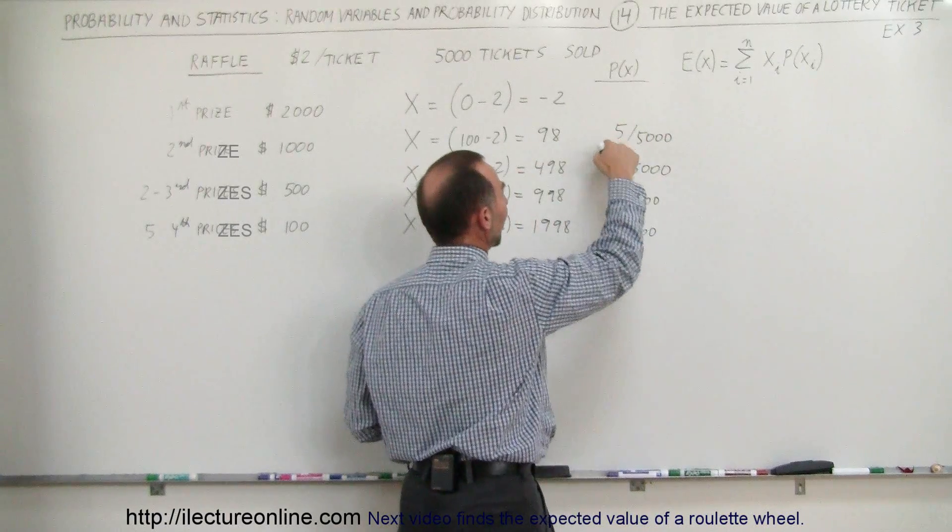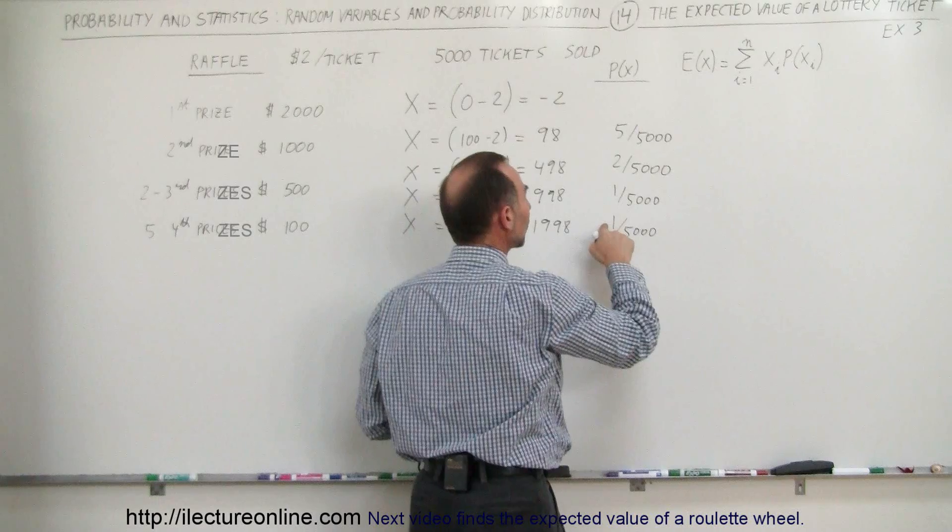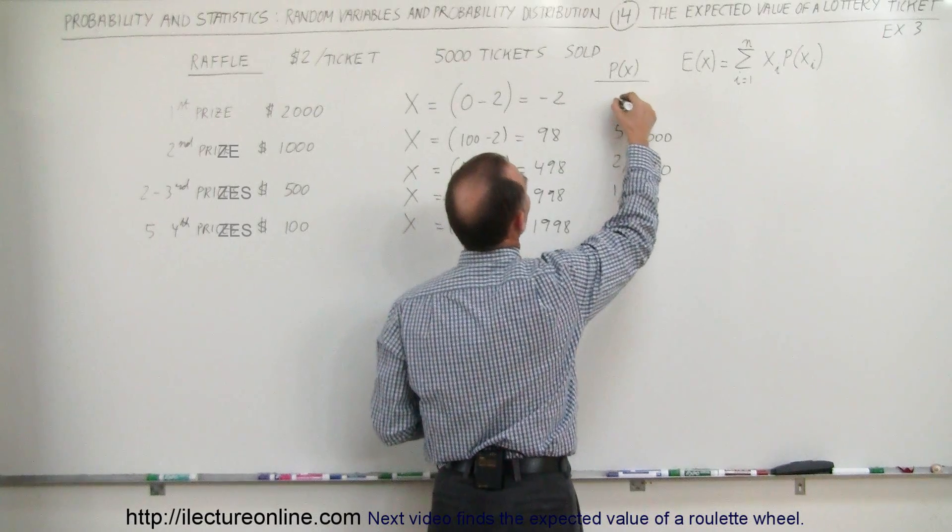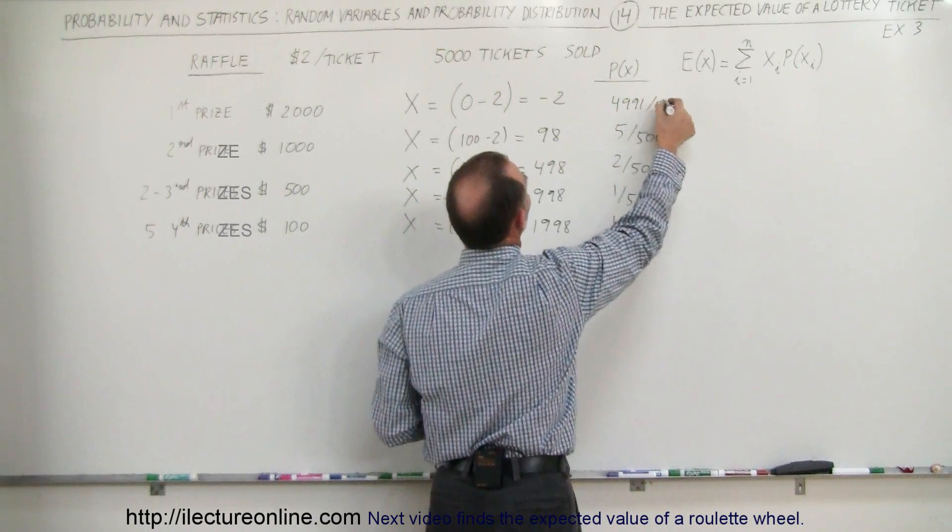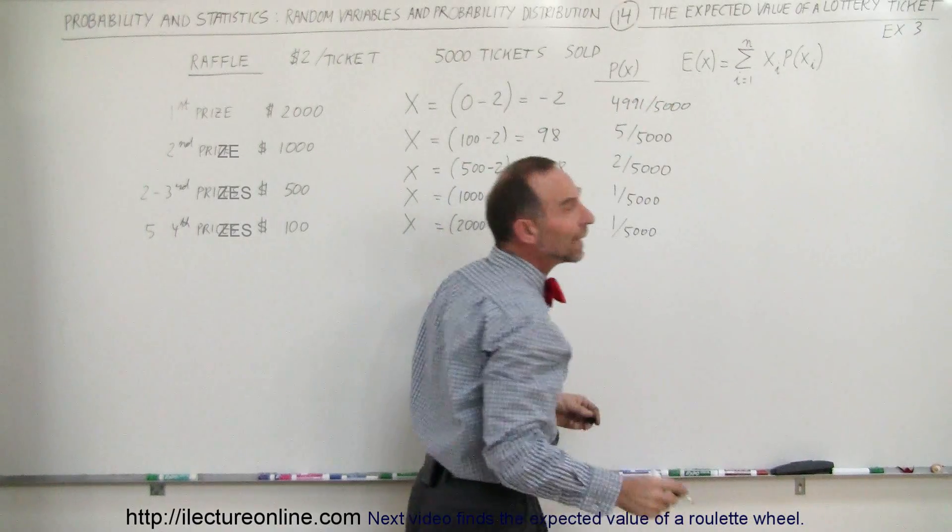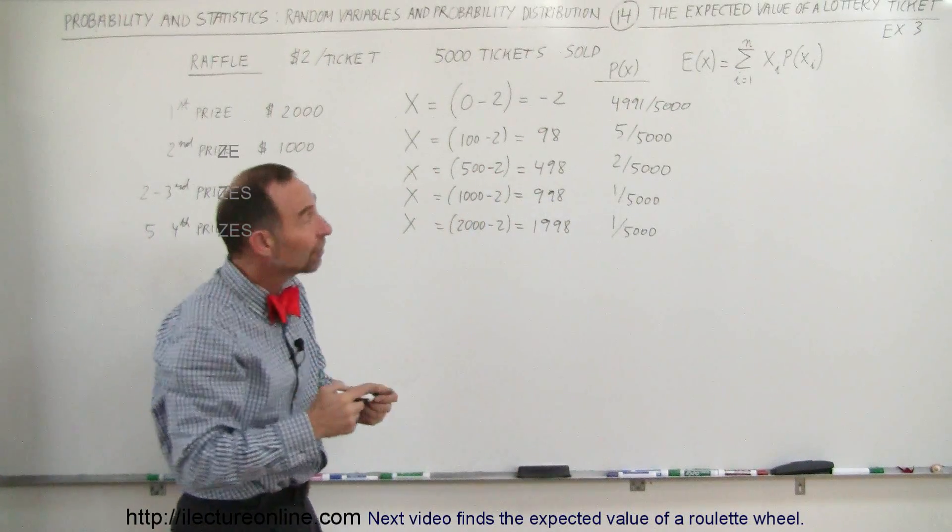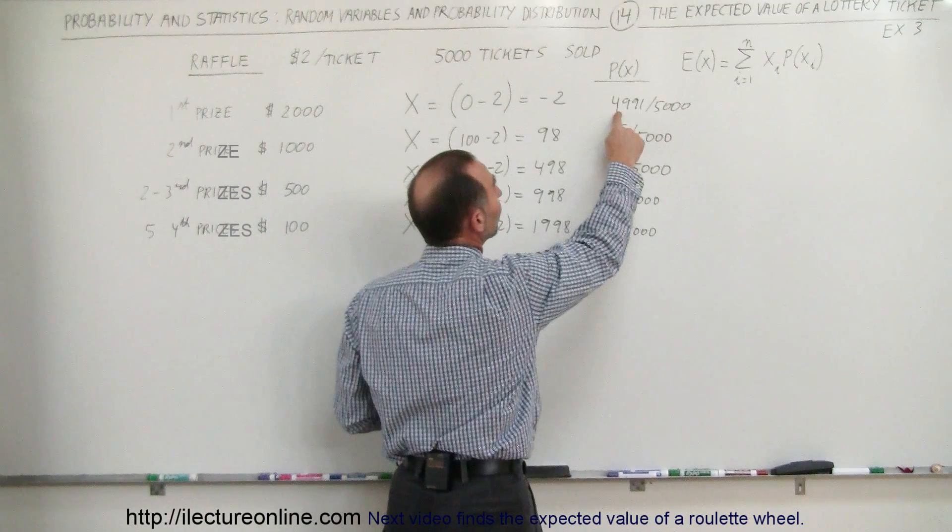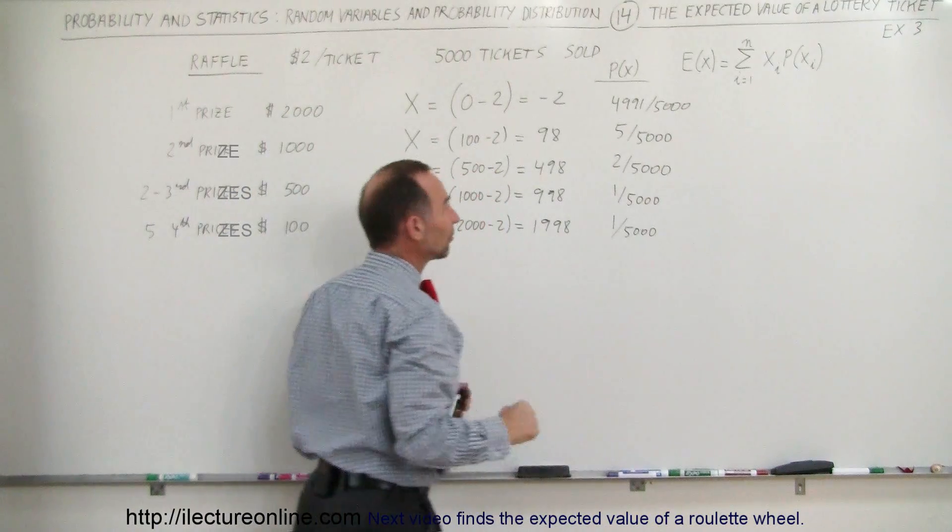And finally, how many tickets are left? Well, that's five, seven, eight, nine tickets were gone. That means you have 4,991 tickets out of 5,000 that will not win anything at all. And so the probability of getting one of those is 4,991 out of 5,000.